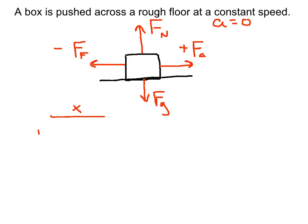So we'll say FA minus FF equals Ma. Now, A is zero. So really, we could rearrange this and say FA equals FF.